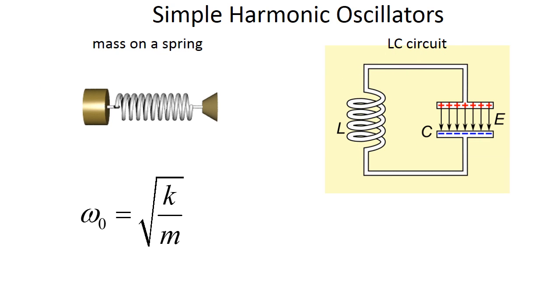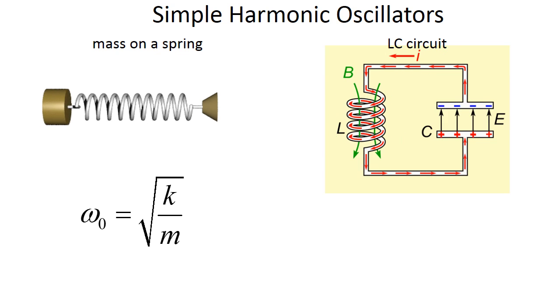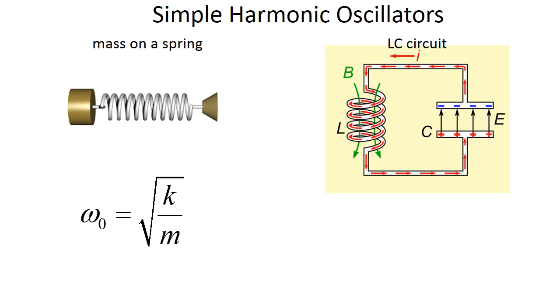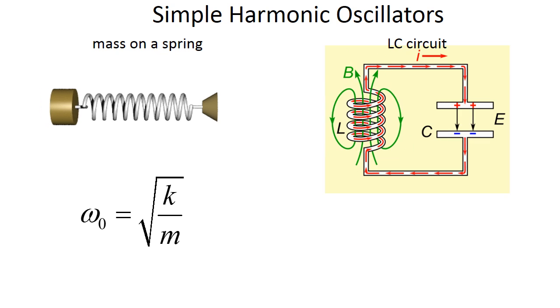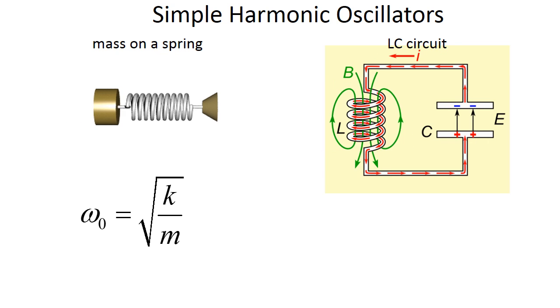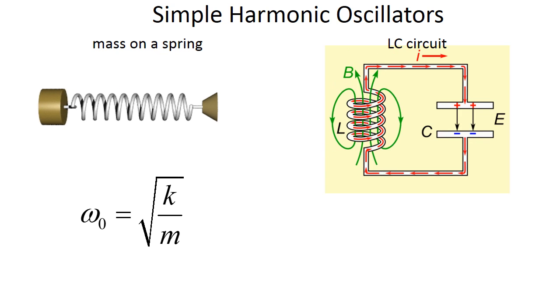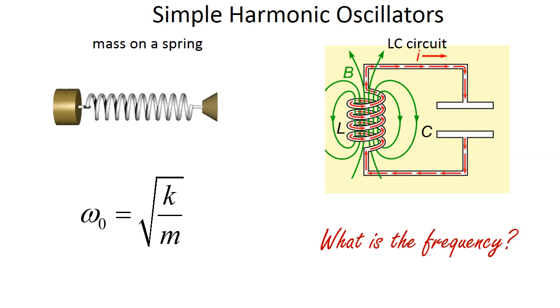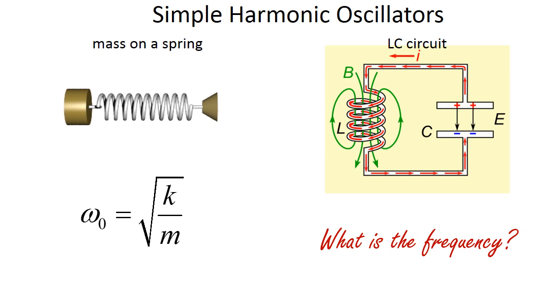Equivalently, I can create a system using an inductor and a capacitor. In this case, energy will constantly be transferred from stored energy in the electric field of the capacitor to stored energy in the magnetic field of the inductor. Using the analogies we discussed, what will be the characteristic frequency of this system?